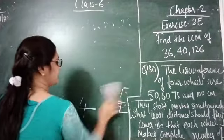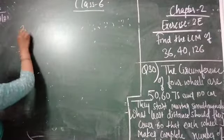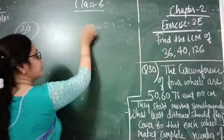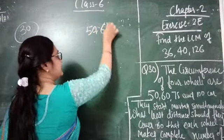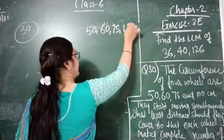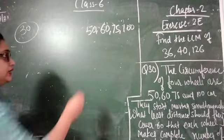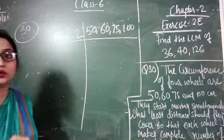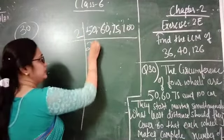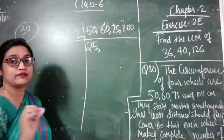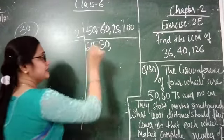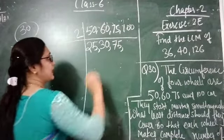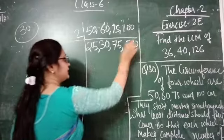For question number 30, the 4 numbers are 50, 60, 75 and 100. Starting by dividing by 2: 50 ÷ 2 = 25, 60 ÷ 2 = 30, 75 cannot be divided so write 75 as it is, and 100 ÷ 2 = 50. Again by 2: 25 as it is (cannot be divided by 2), 30 ÷ 2 = 15, 75 as it is, 50 ÷ 2 = 25.